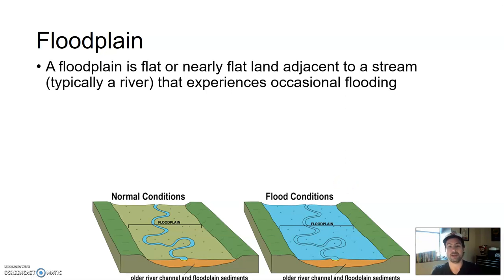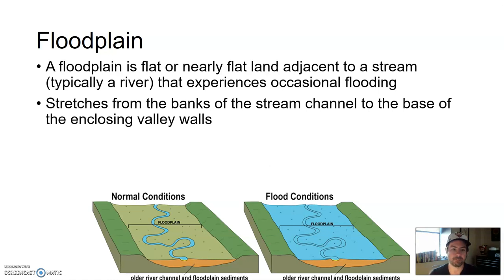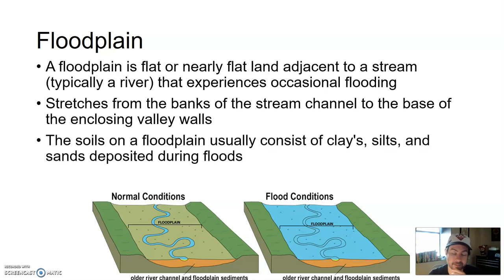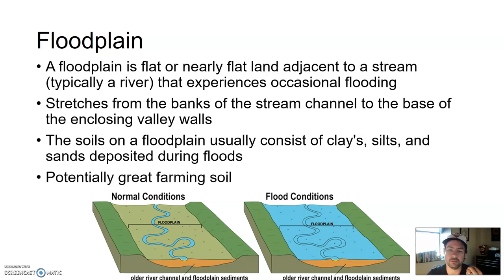Just briefly touching on floodplains: it's flat or nearly flat land adjacent to a stream, typically a river, that experiences occasional flooding. It stretches from the banks of the stream channel to the base of the enclosing valley walls on either side. That entire area could potentially flood — hence the term floodplain. The soils here usually consist of clay, silts, and sand — a good mixture of material deposited during floods — which creates great farming soil, full of nutrients and perfect for growing.